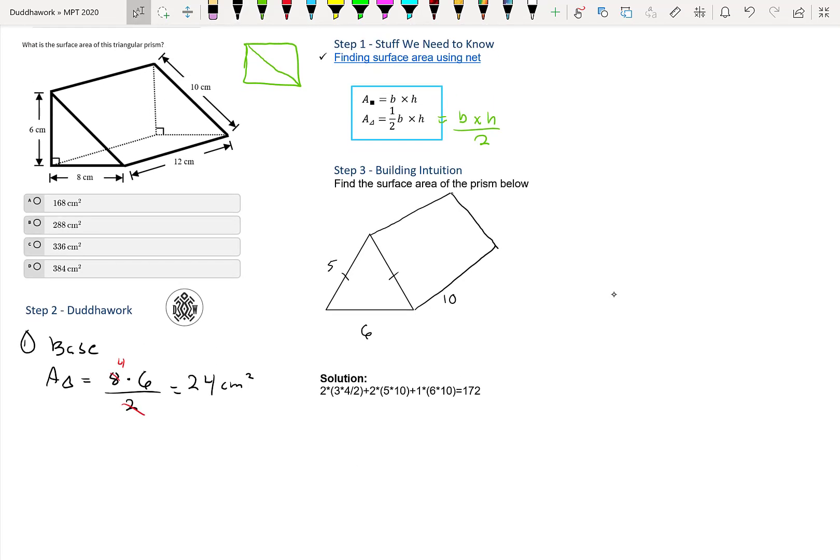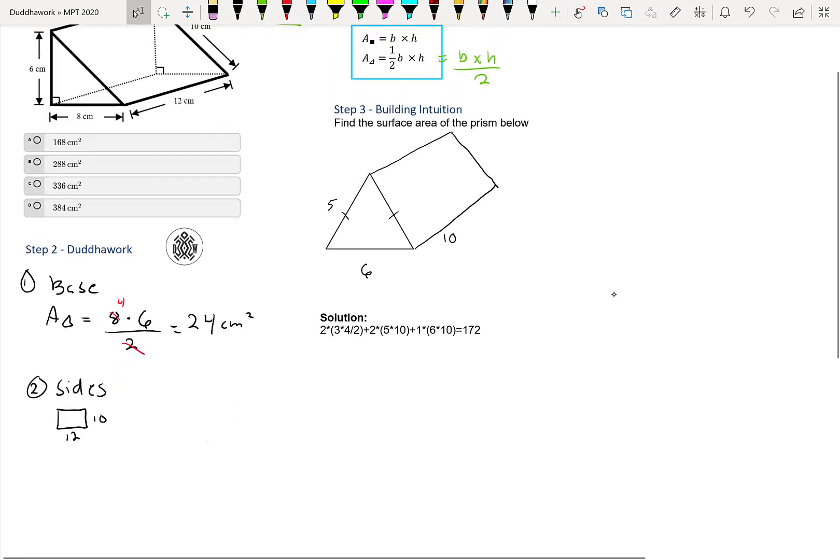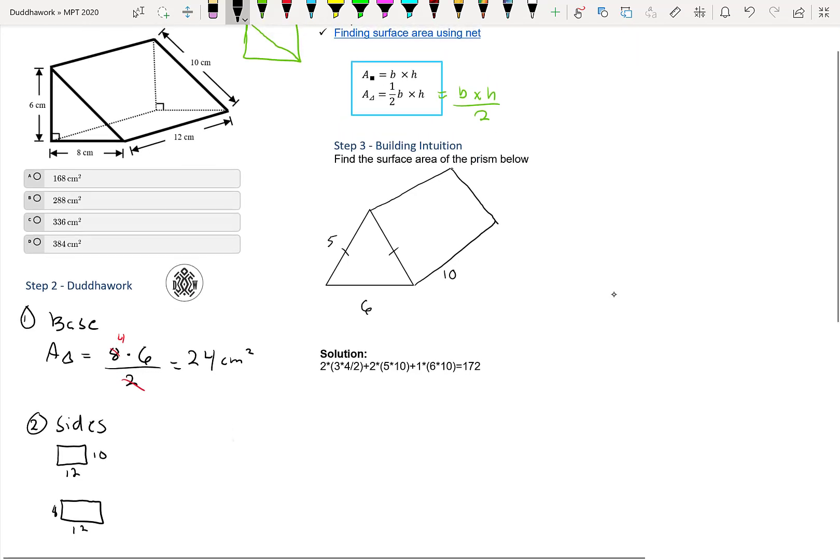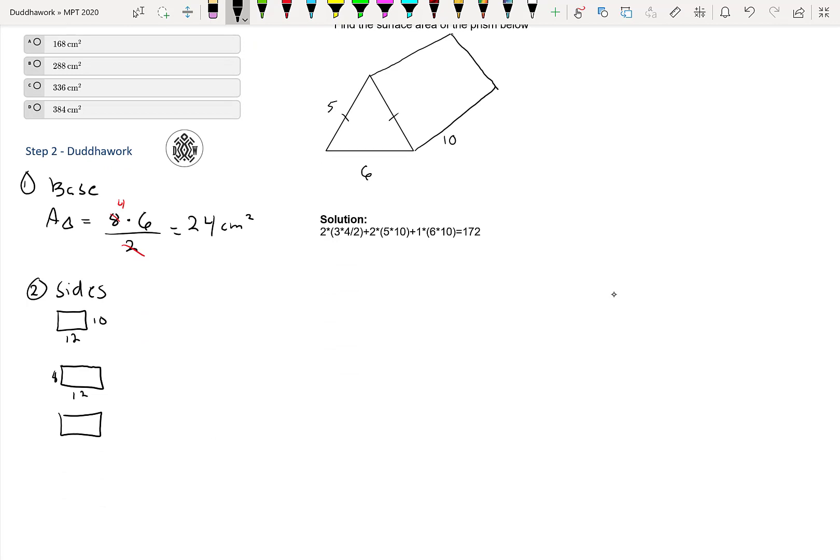Now, if we look at the sides, we have a bunch of rectangles. We have this one. So, that's 12 times 10. We also have the bottom one, it's 12 times 8. And then the other one is 12 times 6. So, we have three different rectangles.